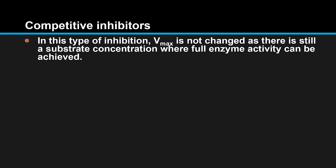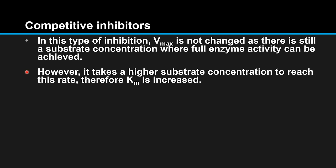In this type of inhibition, Vmax is not changed as there is still a substrate concentration where full enzyme activity can be achieved. However, it takes a higher substrate concentration to reach this rate, therefore Km is increased.